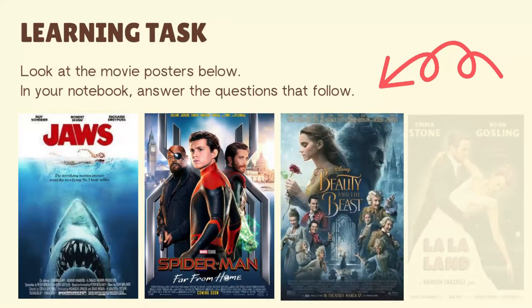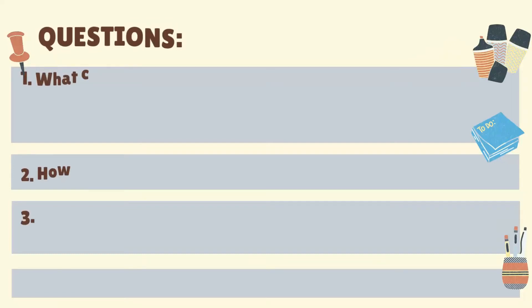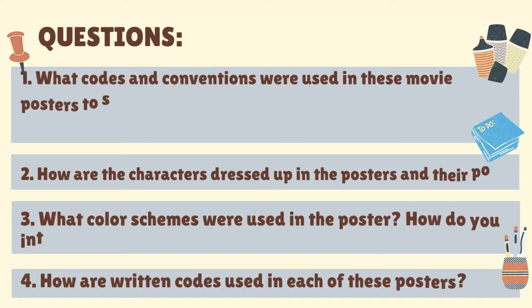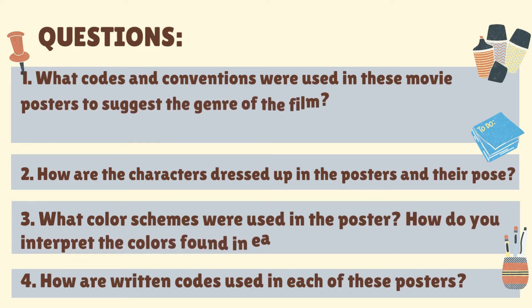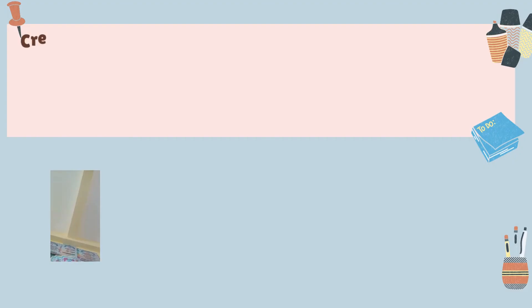Now it's time for an activity. Look at the movie posters below and answer the questions in your notebook: What codes and conventions were used in these movie posters to suggest the genre of the film? How are the characters dressed and posed in the posters? What color schemes were used and how do you interpret the colors? How are written codes used in each of these posters?